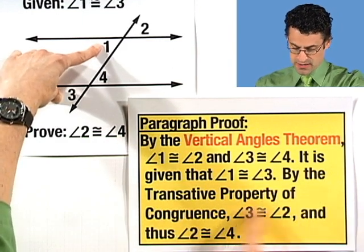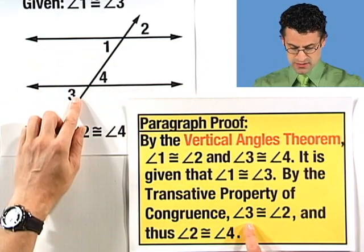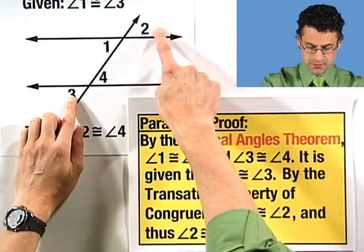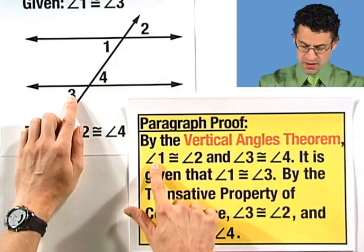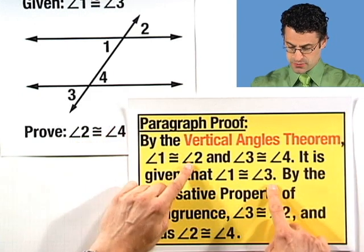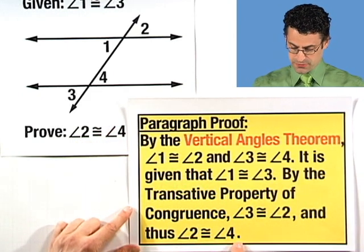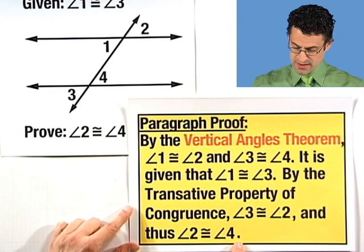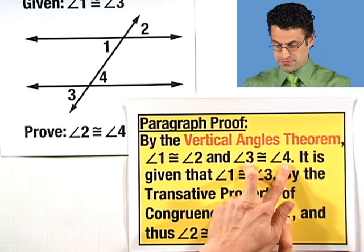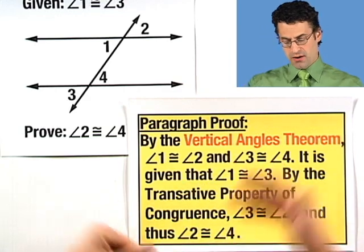So, by the transitive property of congruence, and we predicted that too, we see that angle three is congruent to angle two. Why is that? Well, because we know that one is congruent to two, and we know that one is congruent to three, and so therefore two must be congruent to three, and thus two is congruent to four. Why is that? Well, I have that three is congruent to two, I know that three is congruent to four, therefore these two must be congruent to each other, and that's what we're trying to prove.